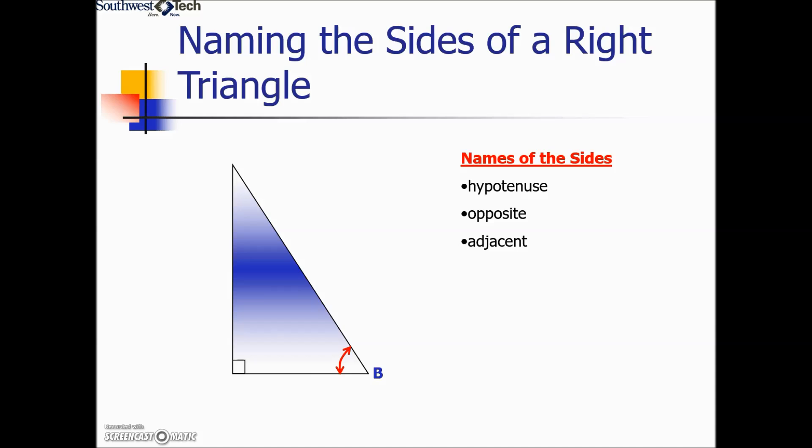Now if our reference angle had been here on the bottom of the triangle with angle B, it's acting as our home base.